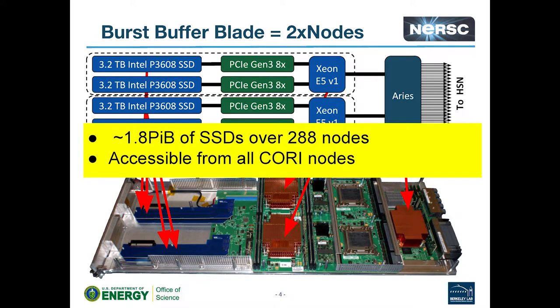There's a nice picture of what the burst buffer node looks like. We have pretty large capacity — 1.8 petabytes over 288 nodes — considering this is used for individual jobs. And just to stress again, this is only available on Cori.